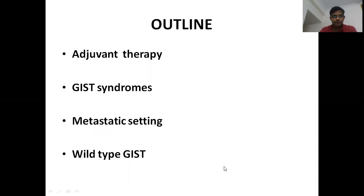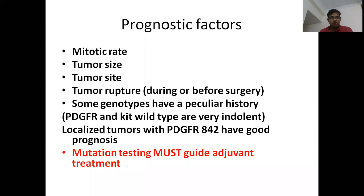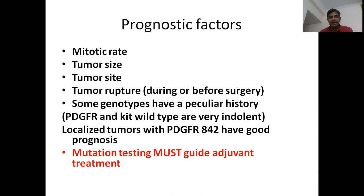I have divided my talk into a few parts. Adjuvant therapy — what kind of adjuvant therapy should be given post-surgery to decrease recurrence. To understand what therapy to give, we need to understand the chances of recurrence for a given patient. That depends on mitosis (the ability of cells to divide), tumour size, tumour site (stomach, small intestine, or elsewhere), tumour rupture — a very important prognostic factor — and mutations, which are also extremely important and must be assessed.